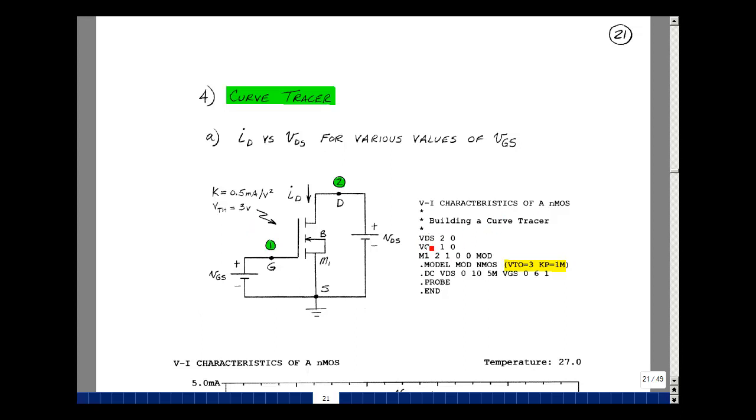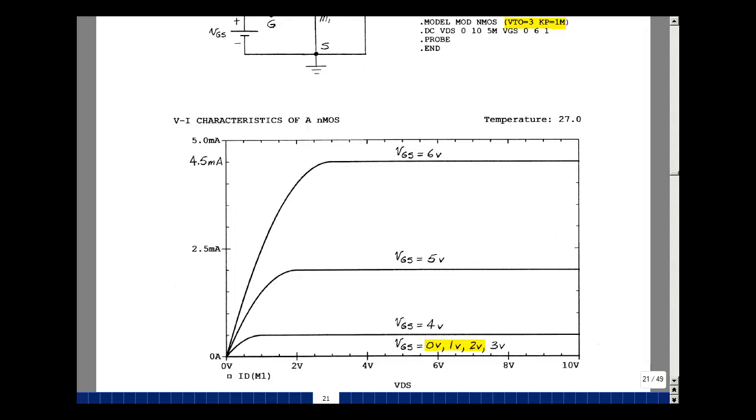We have a title, comments. The drain source battery is between nodes two and zero with a default value of zero. The gate source is between one and zero with a default value of zero. And our transistor, I'll call it M1, is between drain, gate source, and bulk. Two, one, zero, zero. And we'll just call this MOD, dot model MOD, an NMOS transistor with a threshold voltage of three. So VTO is three. And K prime is twice the value of K, which would be two times 0.5 milli or one milliamp per volt squared. We'll vary our battery here from zero to 10 volts. And again, I'll do 2,000 points. And then we'll go from our gate source voltage from zero to six volts in one volt steps.